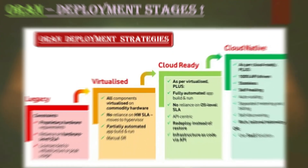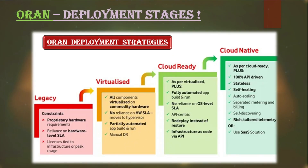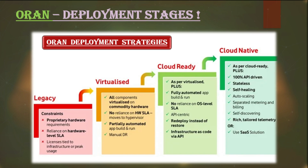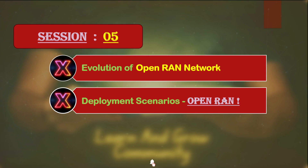In the last session we understood how operators can move from the traditional radio access network system to advanced cloud-native RAN systems. We discussed the different stages which can help operators to gradually upgrade their ecosystems. Now before going deeper, let's look at the traditional radio access network cell and site area, and then have an overview of traditional RAN and how evolved open RAN is going to differ from existing RAN systems.